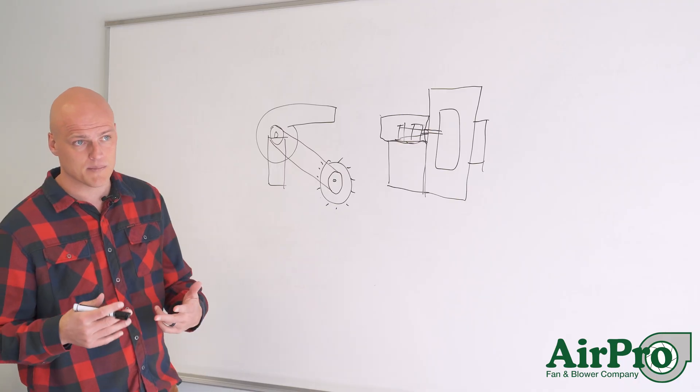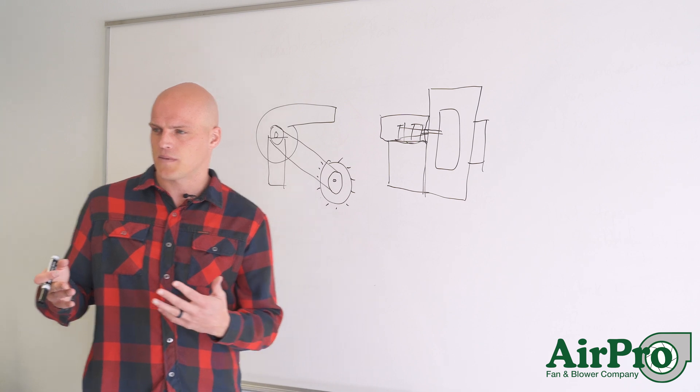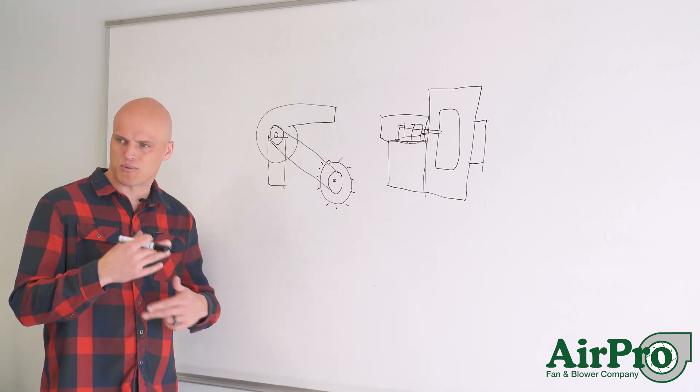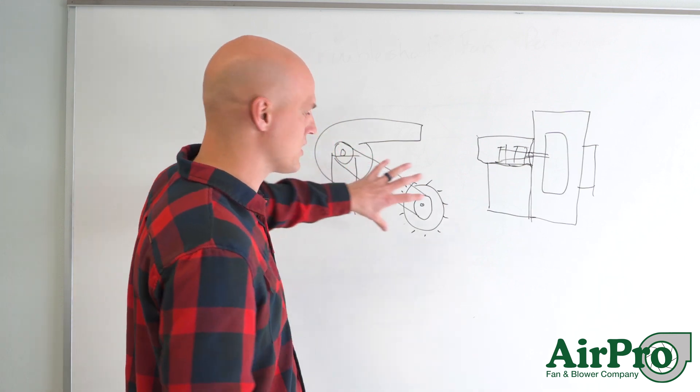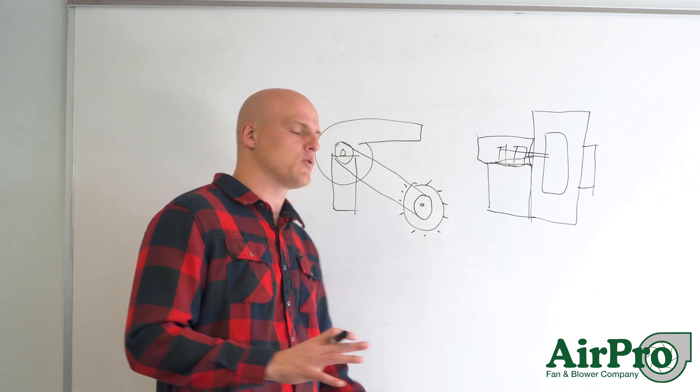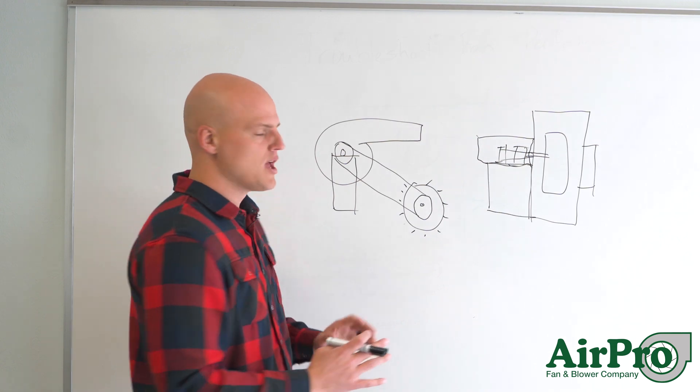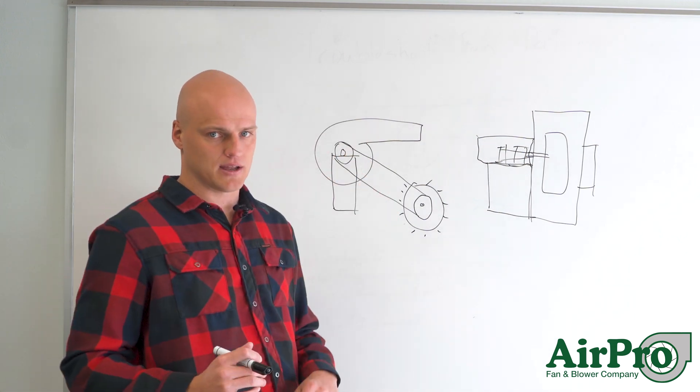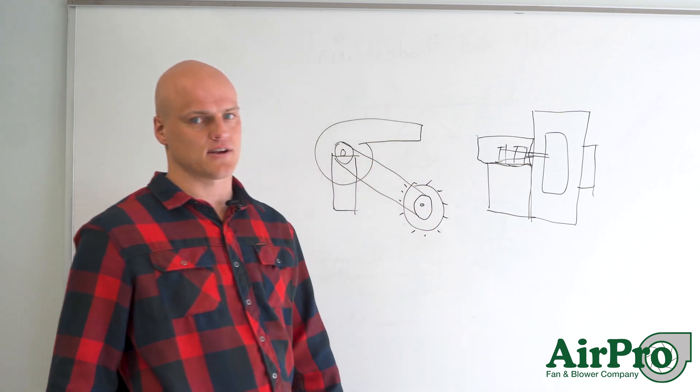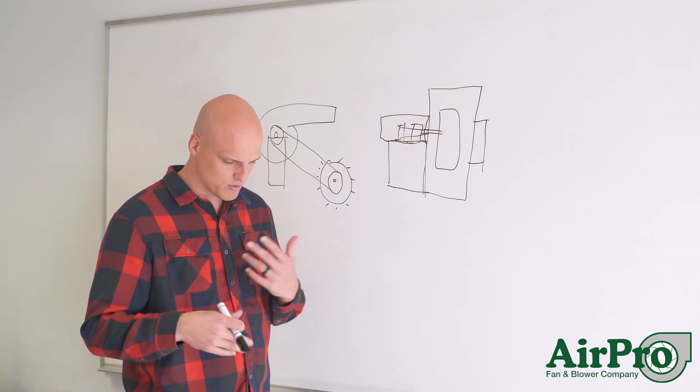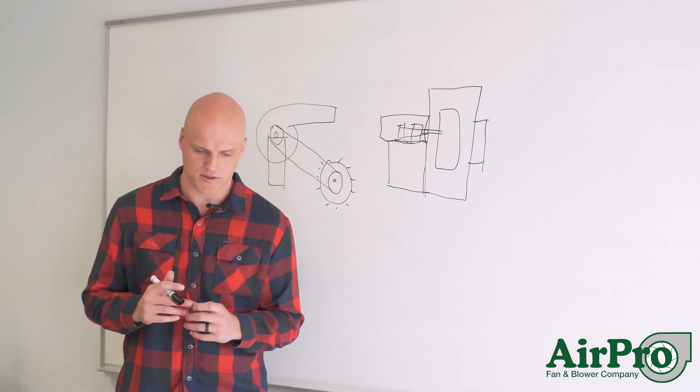So those are two common reasons. A third one maybe would be, you're moving a really abrasive thing through the fans, you're planning to move material and stuff and you really want to protect your motor from that. You want to isolate the motor from maybe the vibrations that are happening within the fan that are expected, and so you put this on a separate base all together, your motor.